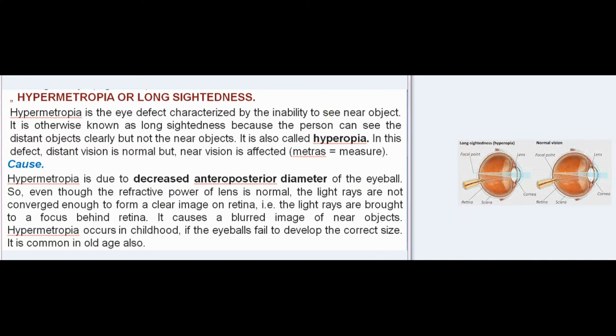Cause: Hypermetropia is due to a decreased anteroposterior diameter of the eyeball. So, even though the refractive power of the lens is normal, the light rays are not converged enough to form a clear image on the retina, i.e. the light rays are brought to a focus behind the retina. This causes a blurred image of near objects.